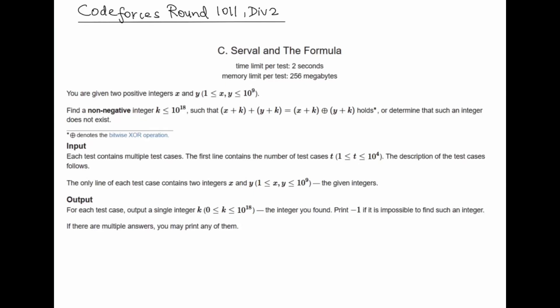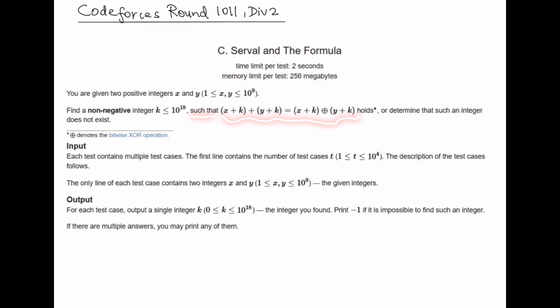Hello everyone. Today we are going to discuss Codeforces Round 1011 Div 2. The problem we are going to discuss is Part C, "Serval and the Formula". You're given two positive integers x and y, the range of x and y is given. Find a non-negative integer k less than or equal to 10 raised to the power of 18 such that this condition is satisfied.